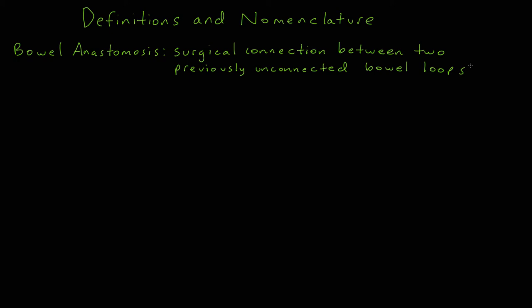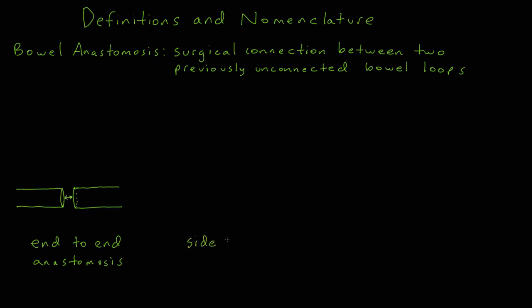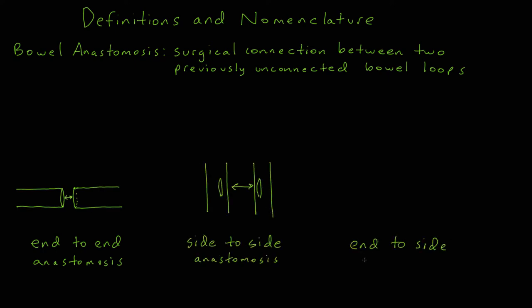Anastomoses are described in terms of the orientation of the two loops of bowel used to connect them. There are three possible orientations: end-to-end anastomosis, side-to-side anastomosis, and end-to-side anastomosis.